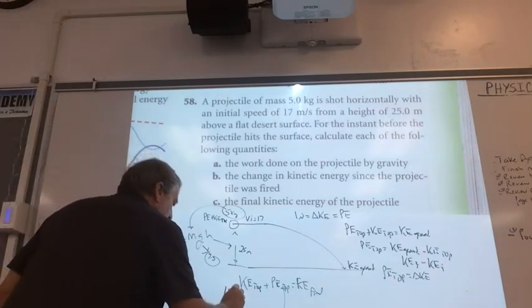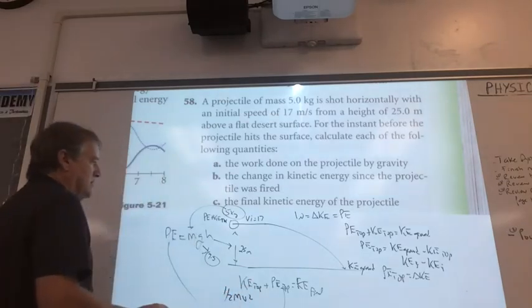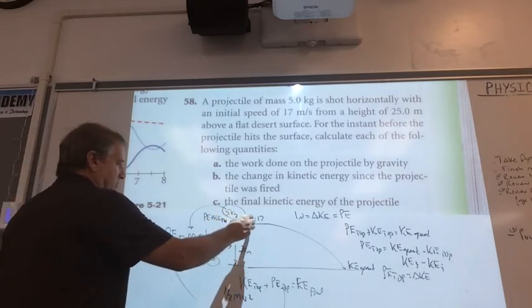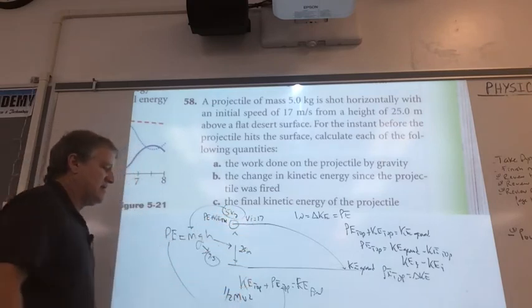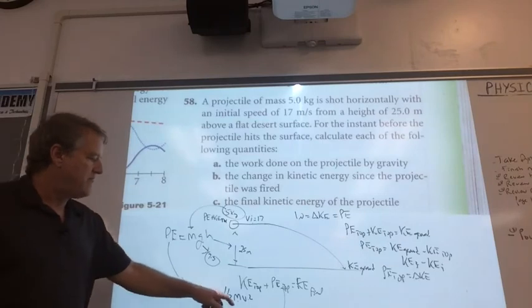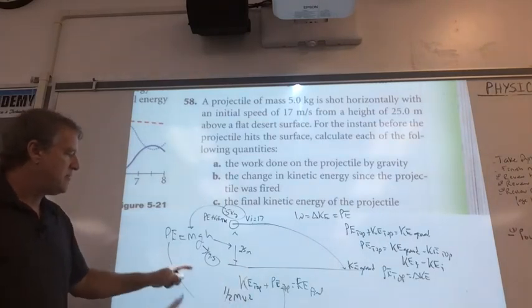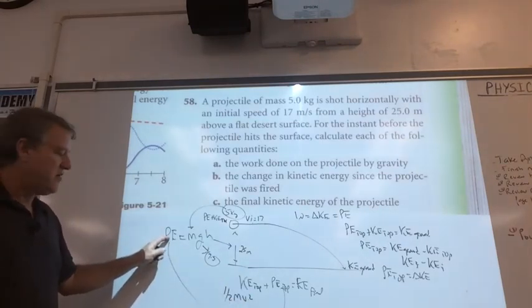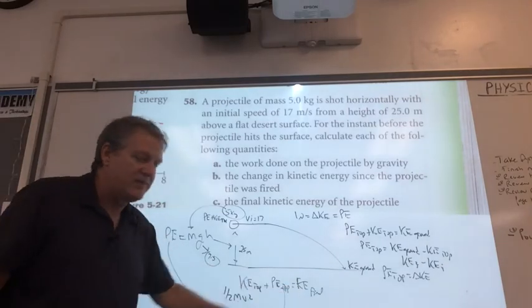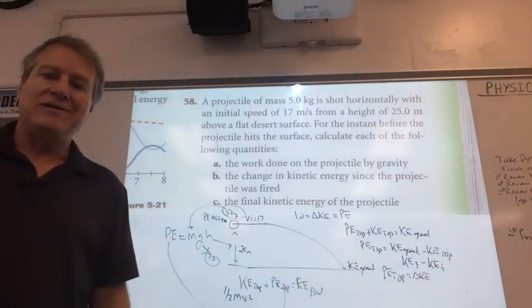Well, this is equal to one half mv squared. We know the m and we know the v. Oh, is it that simple? Yeah. So you just go one half mv squared, that's the kinetic energy at the top. Add it to the PE that you found here, and guess what, that's equal to your KE final.